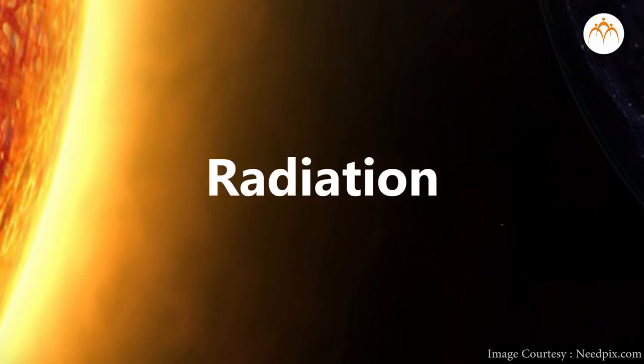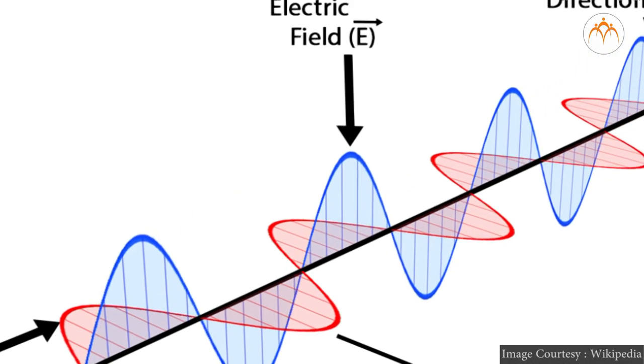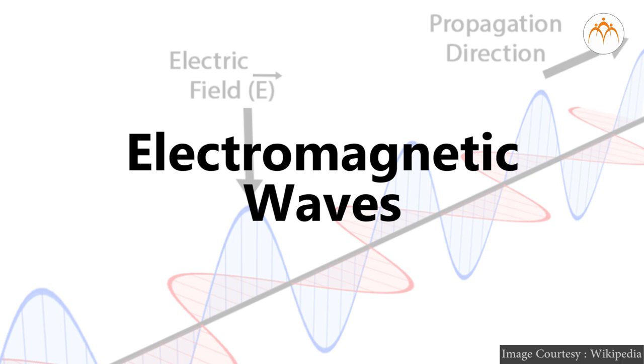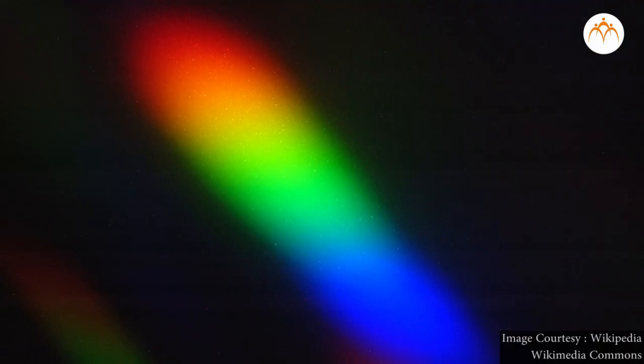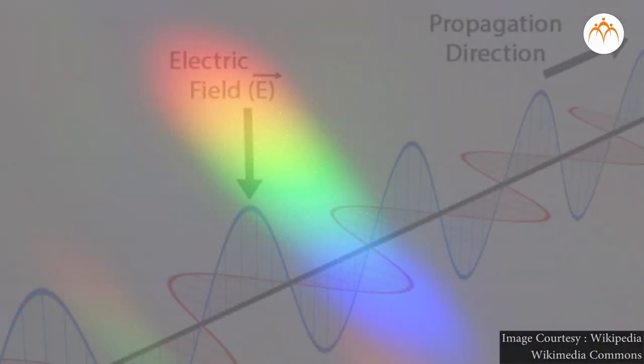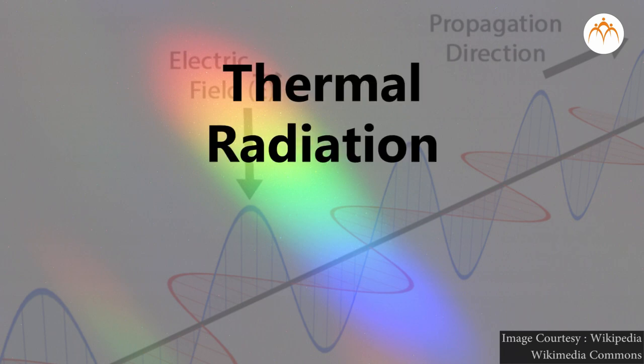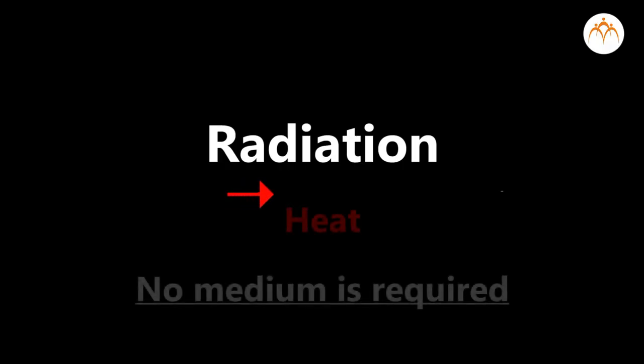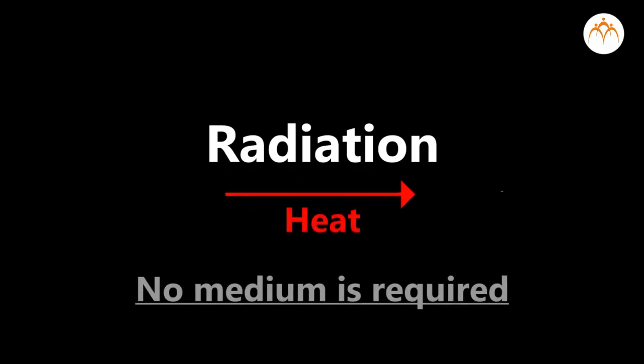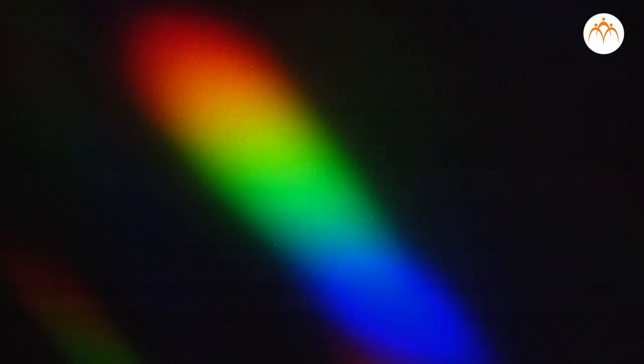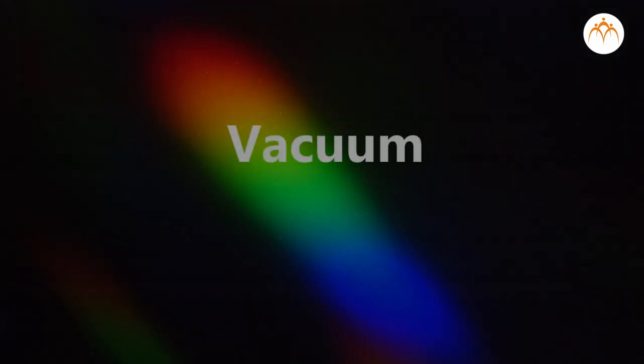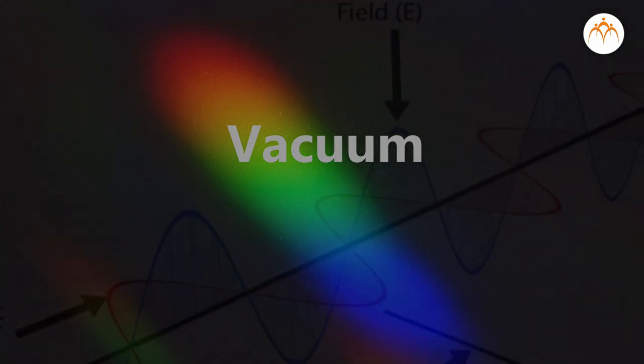To radiate generally means to emit. Heat is transferred in the form of electromagnetic waves. Visible light is one kind of electromagnetic wave. Energy transferred this way is called thermal radiation. No medium is required for heat transfer by radiation. Light energy also travels through vacuum as it is transferred in the form of electromagnetic waves.